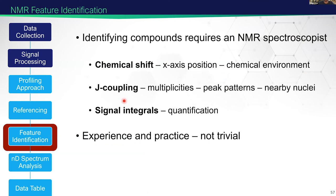Fundamentally, there are three things we use for NMR identification: chemical shift — the x-axis position indicating the chemical environment of that nucleus; J-coupling or multiplicity — describing the peak pattern, whether it's a singlet, doublet, or triplet, telling us something about adjacent nuclei in the molecule; and signal integrals for quantification — the amount of signal detected directly tells us about how many nuclei are giving rise to that signal.